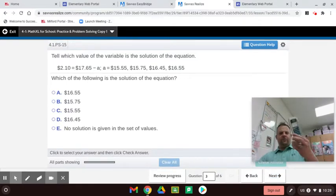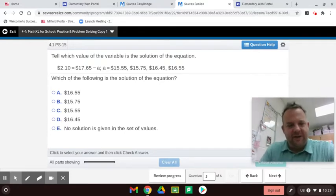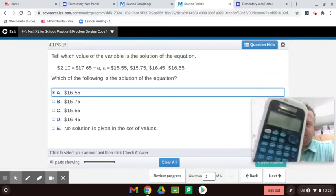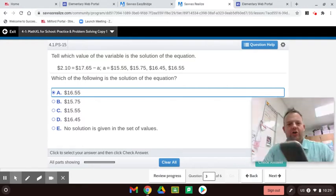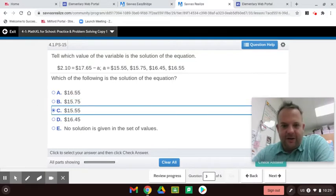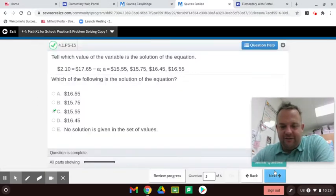And you can use a calculator to check. So $17.65 minus what equals $2.10. Let's see, $17.65 minus... and then I'm going to try $15.55. Yep, that equals it. $2.1 equals $2.10. We got it on the first try. It doesn't always happen.